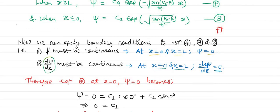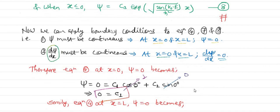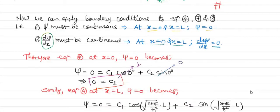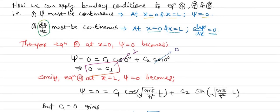From equation 4, applying the first boundary condition at x = 0: ψ = C₁cos(√(2mE/ℏ²)·x) + C₂sin(√(2mE/ℏ²)·x) = 0. Since sin(0) = 0 and cos(0) = 1, we get C₁ = 0. Now applying the first boundary condition at the second boundary x = L: ψ must again be 0, so we substitute x = L into equation 4.